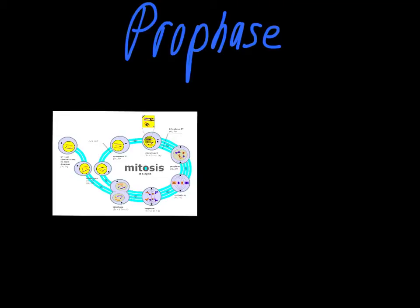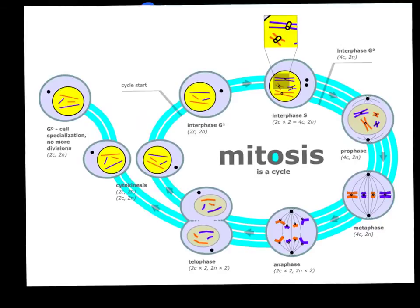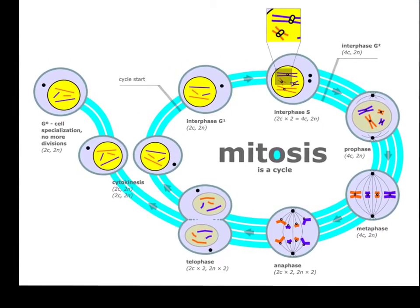This video is about prophase, which is one of the steps of mitosis that you need to know to understand this chapter. We're going to use this diagram as a way of talking about things for most of the chapter. It's very difficult to find a perfect diagram of the process of mitosis. I like a lot of things about this one, although there are a few things I'll point out that we'll look at a little bit differently. We're looking at prophase over on the right-hand side. Prophase is one of the more complicated aspects of mitosis.